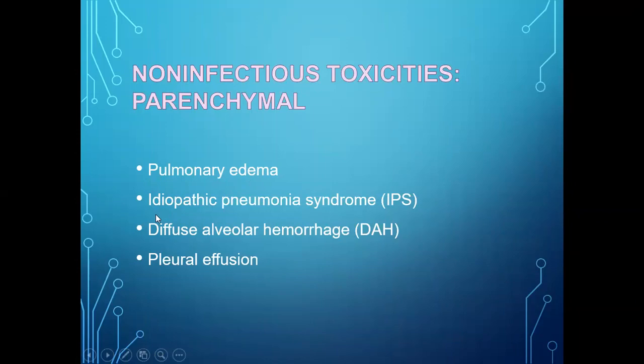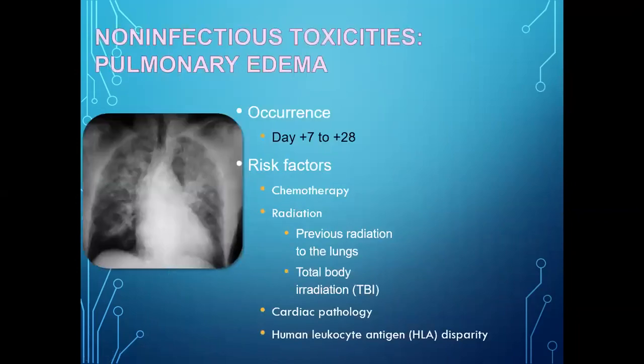Non-infectious parenchymal toxicity includes pulmonary edema, idiopathic pneumonia syndrome, DAH, and pleural effusion. Pulmonary edema can occur mainly from day +7 to day +28. Risk factors include chemotherapy, radiation, previous lung radiation, and total body irradiation.